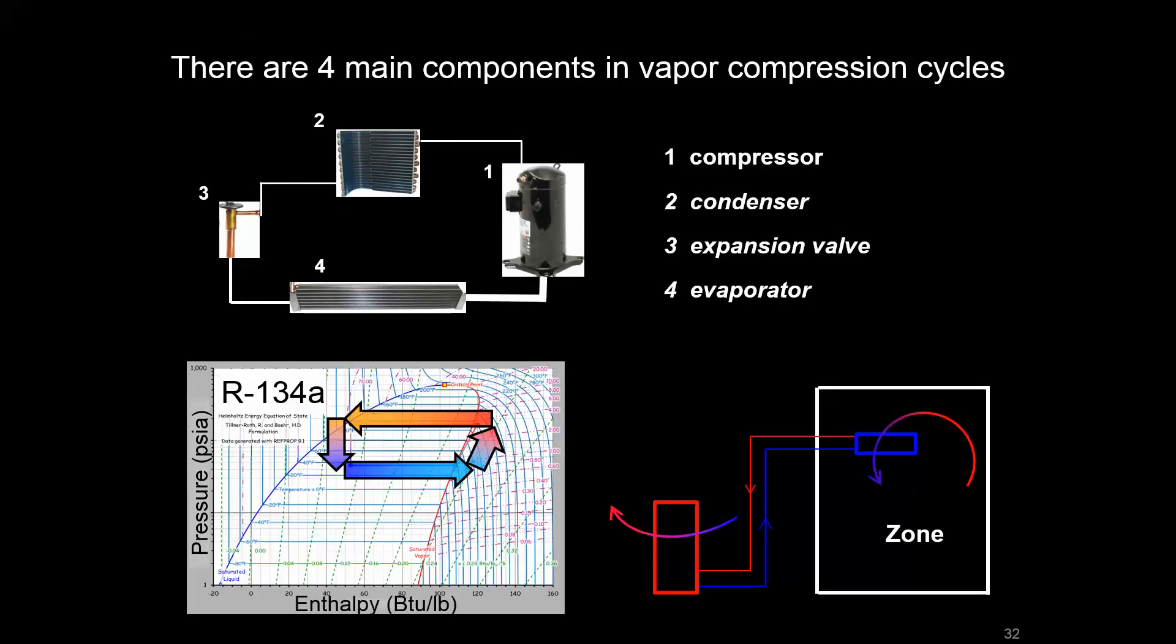There's going to be four main components that we talk about in the vapor compression cycle. The first is the compressor, and that's responsible for pressurizing the refrigerant in this loop and moving it around. As a byproduct, there's going to be a little bit of heat added as well.